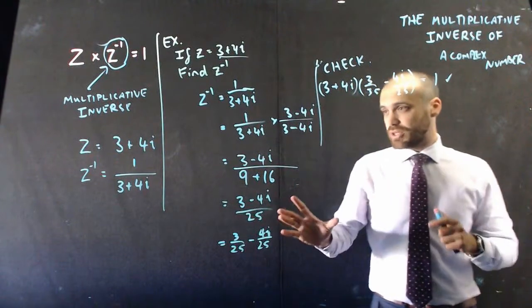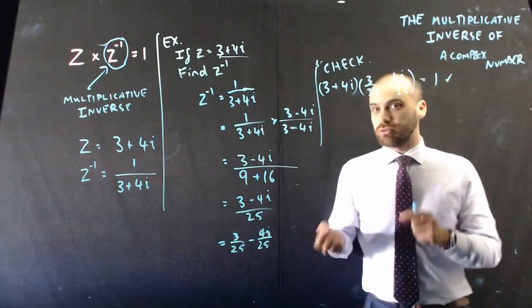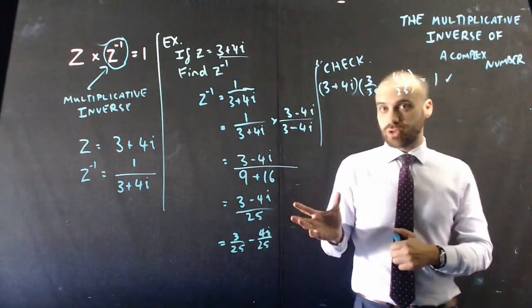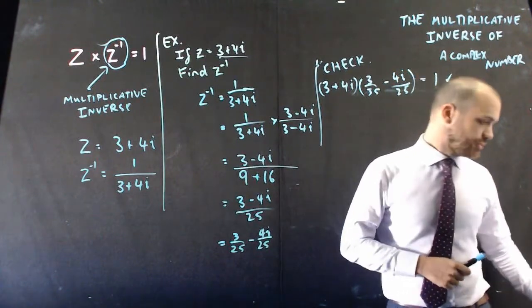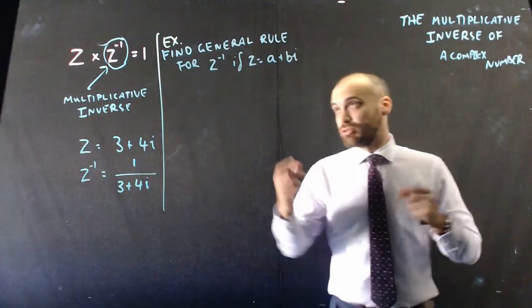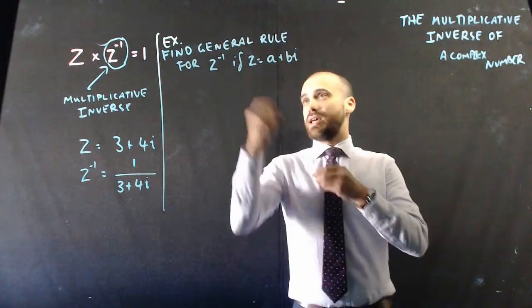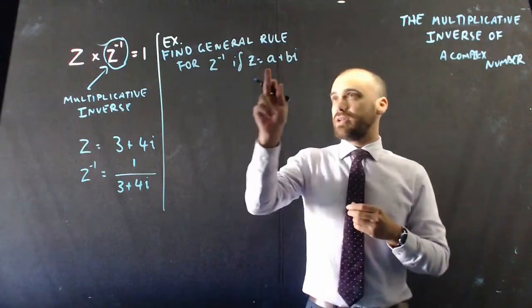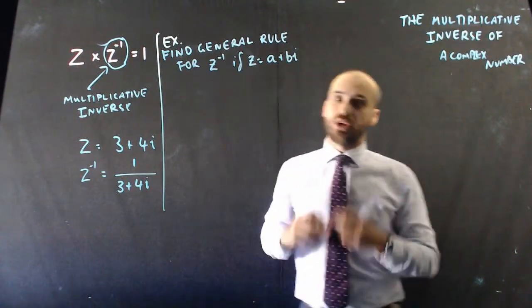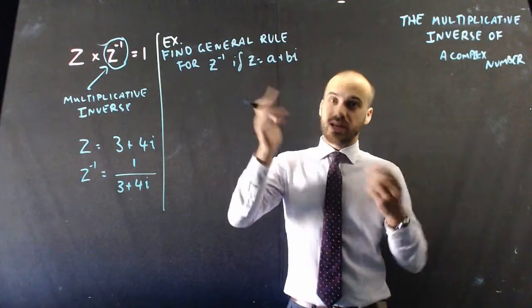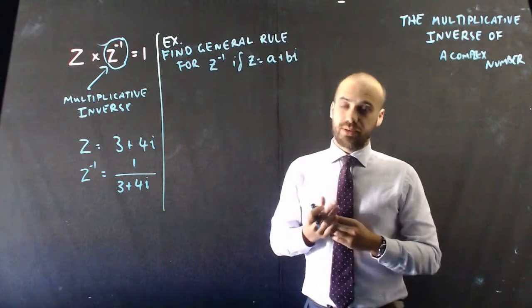Now what's going to happen is I'm going to rub all of this off and I'm going to just give us a general rule for this. If I've just got a general complex number, what's the multiplicative inverse of that general number? So here we're going to come up with a general rule. If z equals a plus bi, find the multiplicative inverse of that. It doesn't matter what a is, it doesn't matter what b is, we should be able to come up with something.